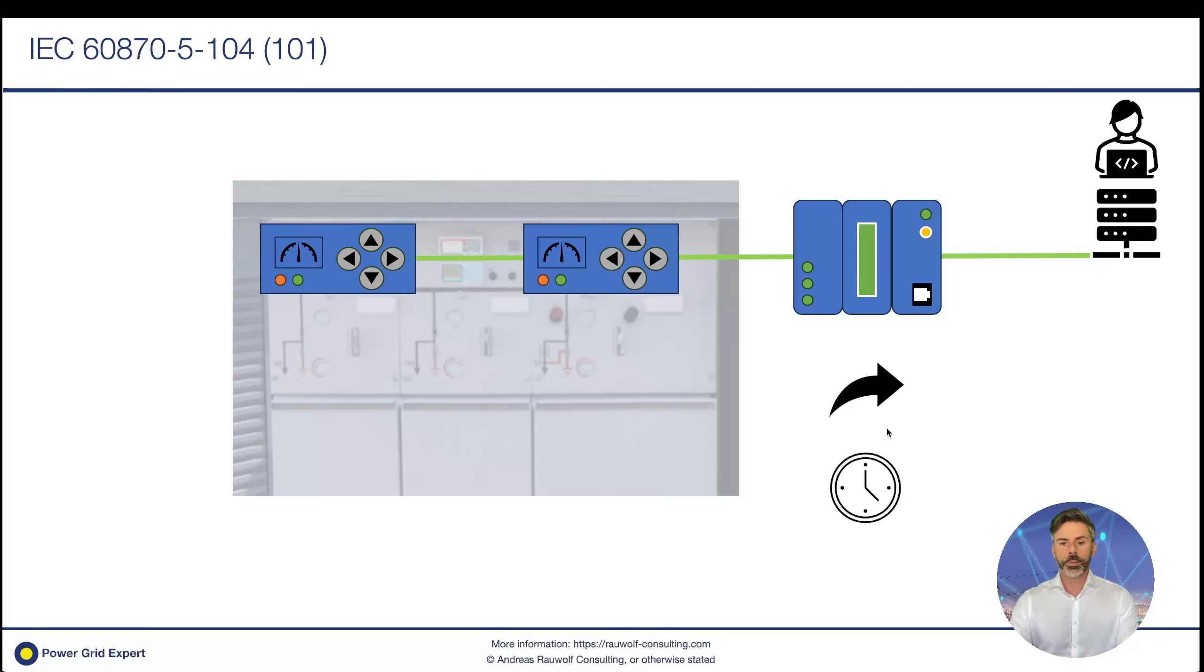104 offers timestamps, which makes it great to sort them in a timely manner after, for example, a fault event, and those timestamps are, let's say, close to real time. And as I said in the beginning here, with the slave speaking 104, there's actually no reason why you could not connect those devices directly to the SCADA systems without an RTU. The only thing you have to keep in mind is everything that applies to the RTU in terms of data safety has to be applied here on those slaves as well.